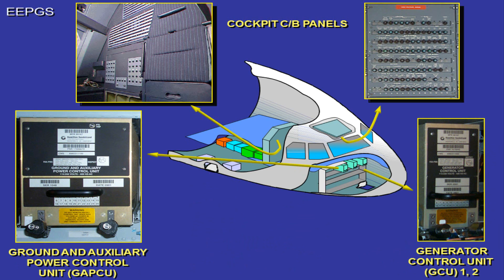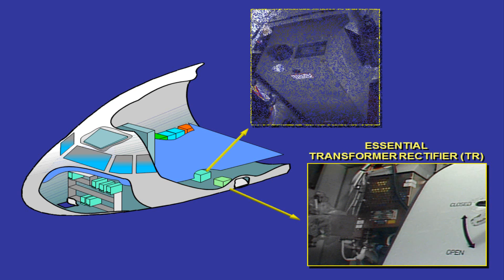In the EEPGS, the GPCU is replaced by a ground and auxiliary power control unit, GAPCU. The GAPCU controls the APU generator and the external power channels. The essential TR is identical to TR1 and TR2; it converts 115 volts AC to 28 volts DC at a rate of 200 amperes. The emergency GCU connects the emergency generator to the essential network if all conditions are met.